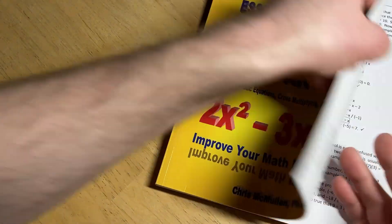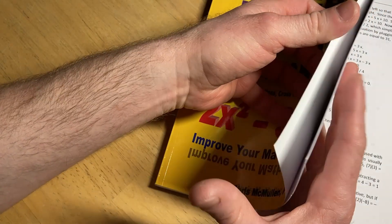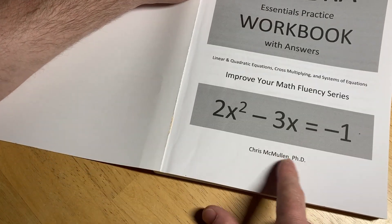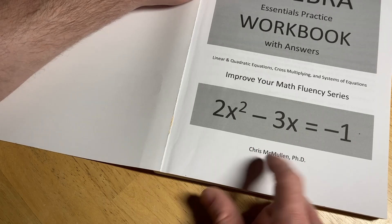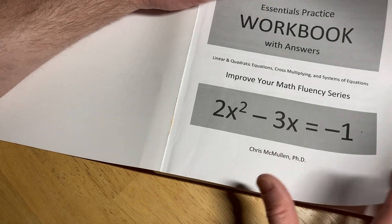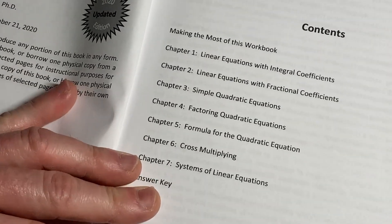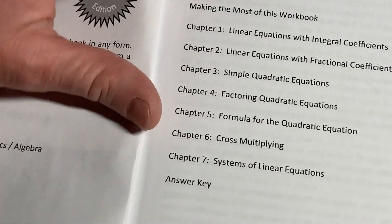So let's take a look at the contents so you can see exactly what it contains. Chris McMullen PhD, he has a lot of books on Amazon and they're all pretty good. All right, so here we have the contents.